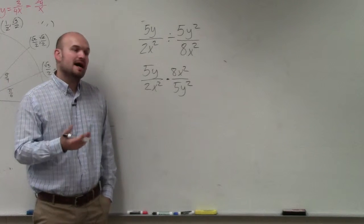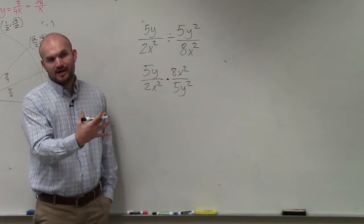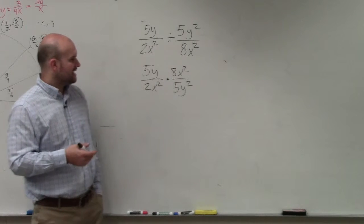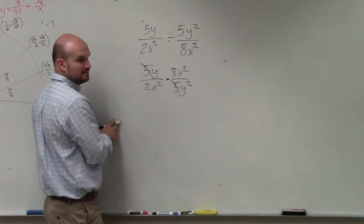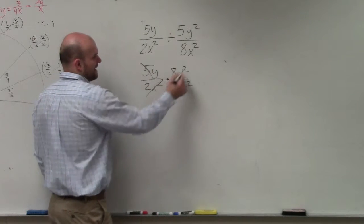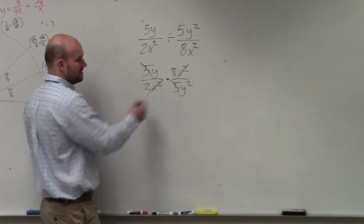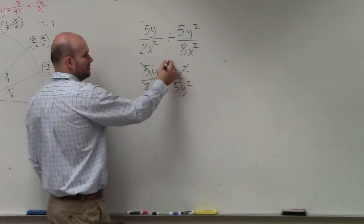Okay? Now, you guys can multiply across if you'd like to and then simplify, but I already kind of noticed here that my fives divide out, my x squareds divide out, and 8 divided by 2 goes to 4.